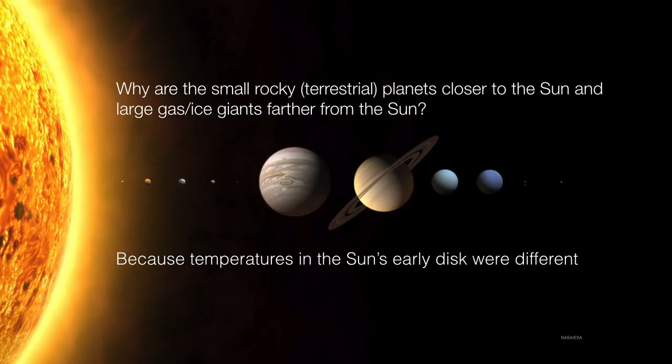And so, why then are the small rocky terrestrial planets closer to the sun and the large gas and ice giants farther from the sun? It's because of that temperature difference. It is only in the outer solar system where these large planets can form because they have an abundance of both refractory and volatiles. However, inside the solar system where the terrestrial planets live, there are only refractory materials to build with.